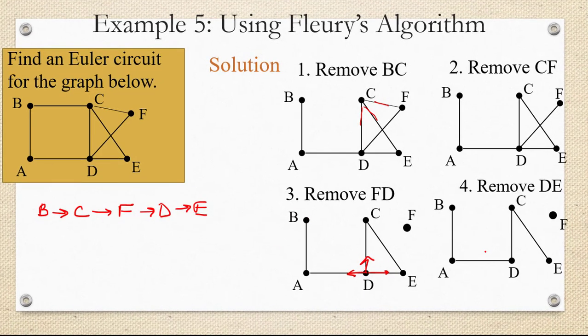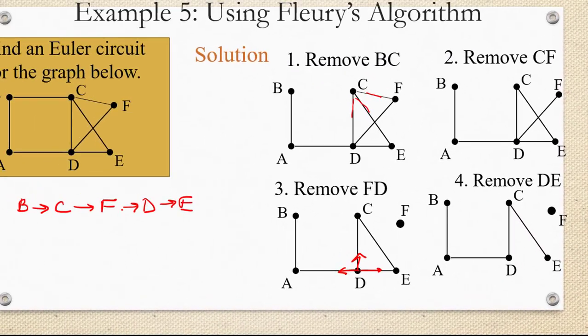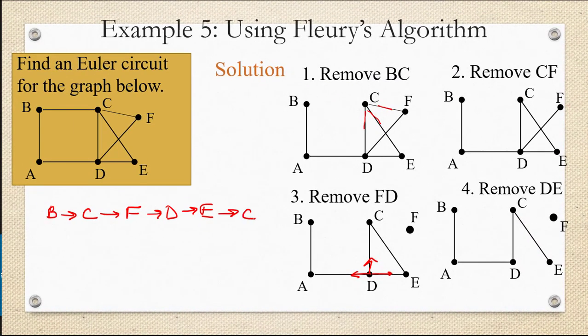But now that I'm here, I can see that for each edge after this, I have absolutely only one option. So from E to C, I will have to remove the edge, and then I'll have to remove C to D, and then I'll have to remove D to A, and then I'll have to remove A to B.